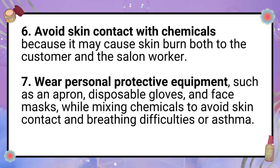OSH Practice 7: Wear personal protective equipment such as an apron, disposable gloves, and face masks while mixing chemicals to avoid skin contact and breathing difficulties or asthma. PPE acts as a shield between harmful substances and the body. Wearing aprons, gloves, and masks prevents skin burns, inhalation of harmful fumes, and long-term health issues like asthma.